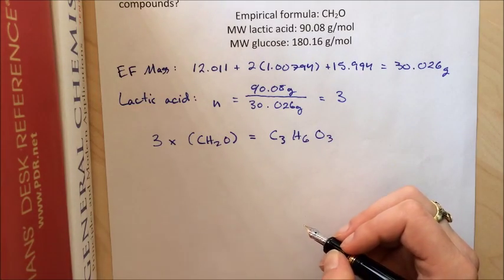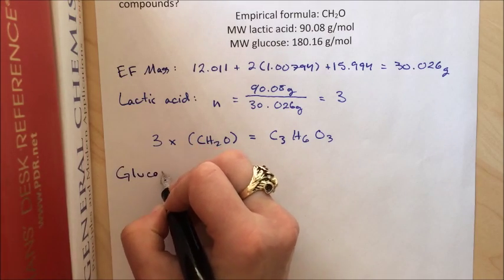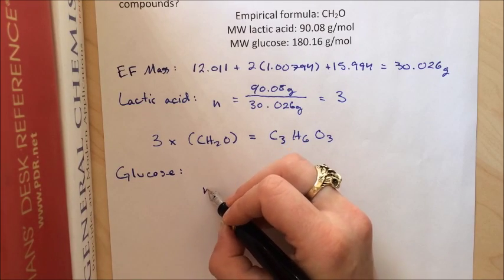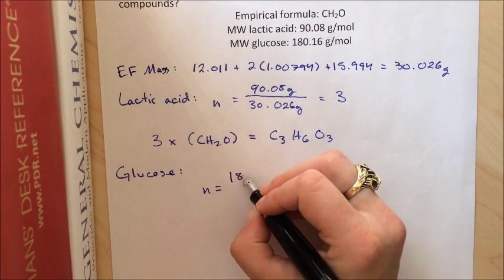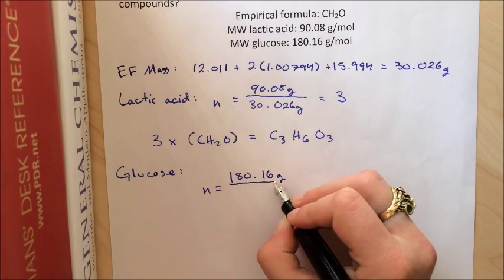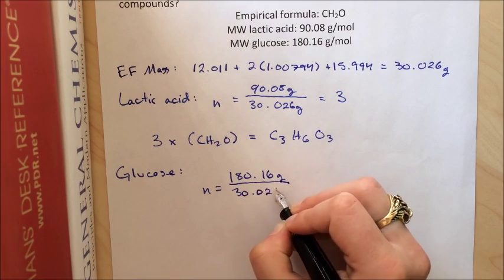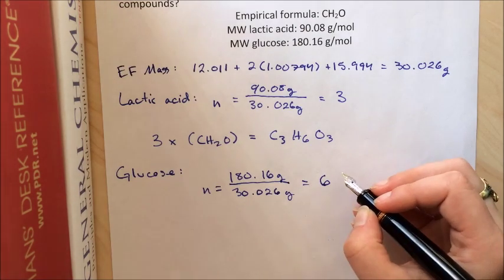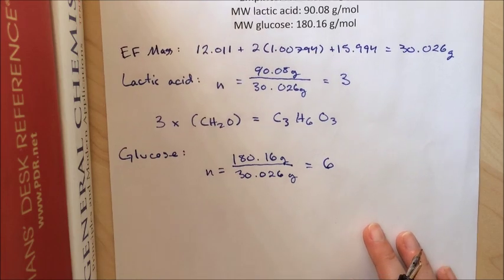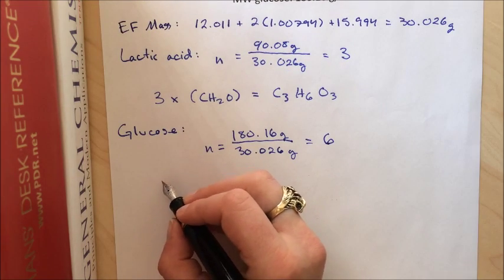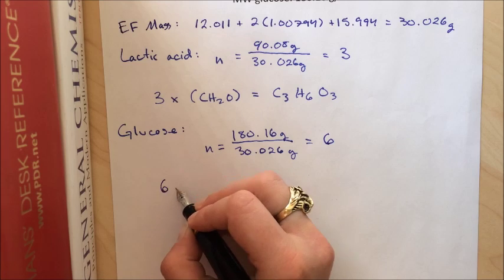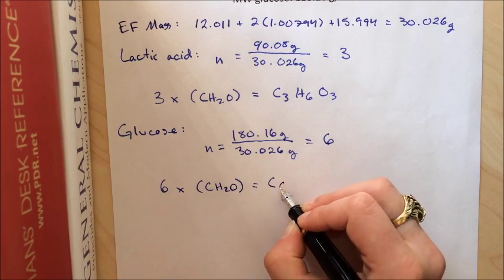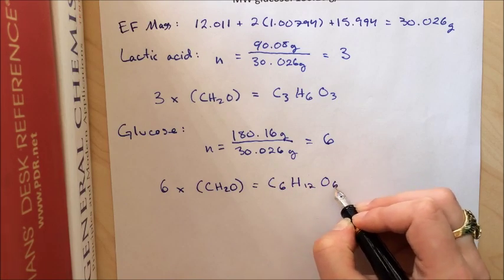Let's do the same thing for glucose. In this case our n equation will be the 180.16 grams divided by that 30.026. This time n is 6. So we're going to multiply the empirical formula unit by 6 to get the formula of glucose. That's C6H12O6.